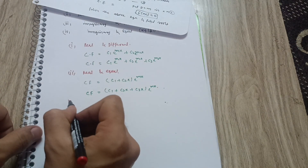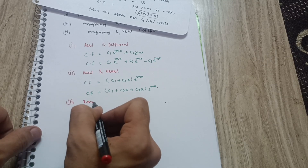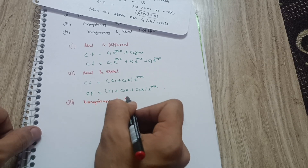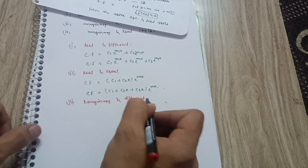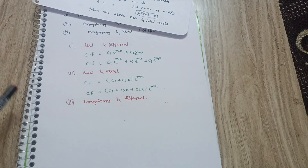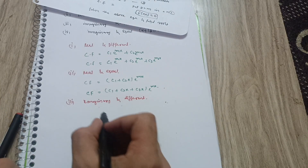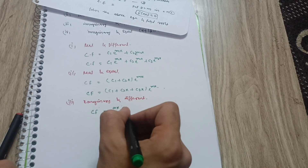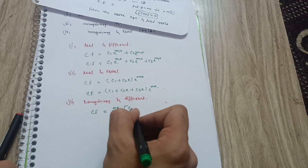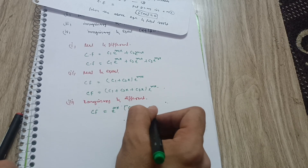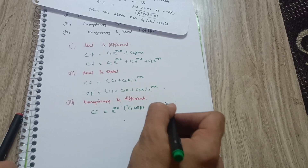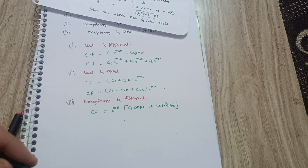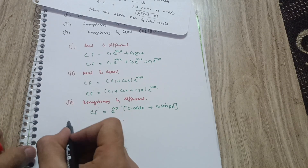For imaginary and different roots, the complementary function is: CF = e^(αx) · [c₁·cos(βx) + c₂·sin(βx)], where α and β come from the complex roots α ± βi.